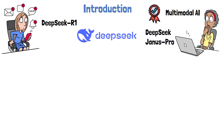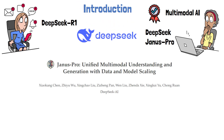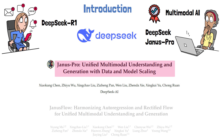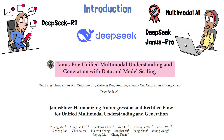In this video, we will explain the research paper behind DeepSeek's Janus Pro, titled 'Janus Pro: Unified Multimodal Understanding and Generation with Data and Model Scaling.' To understand this paper, we also need to explain the preceding paper, which introduced an earlier version of the Janus model titled 'Janus Flow: Harmonizing Autoregression and Rectified Flow for Unified Multimodal Understanding and Generation.'